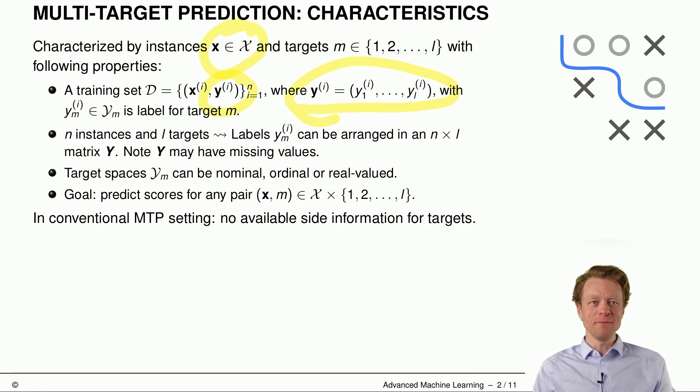So this means we have n instances and l targets. So we can arrange these labels in a matrix called y, which has then dimension n times l, and of course y may have missing values. These target spaces y can be nominal, ordinal, or real valued, and the goal is to predict scores for any pair of feature and target.